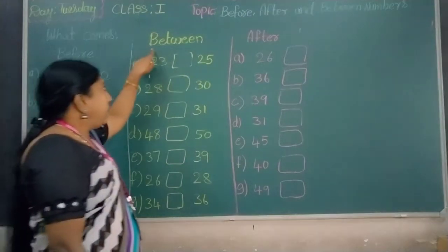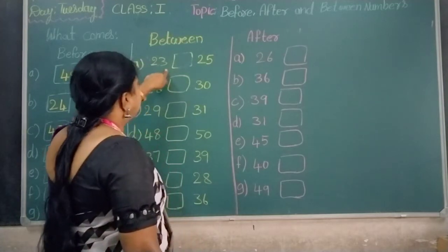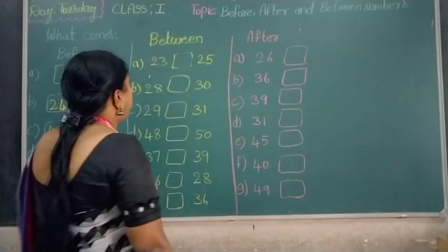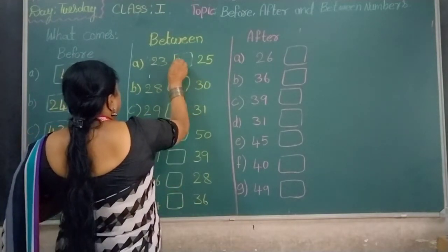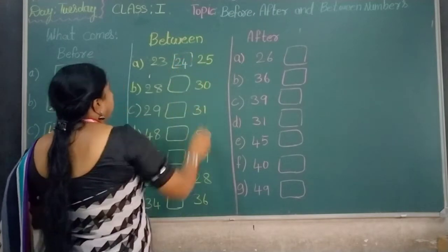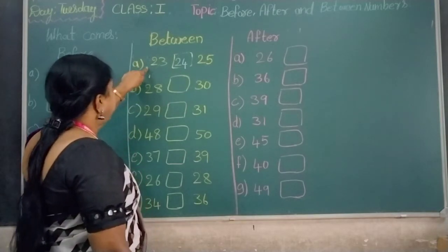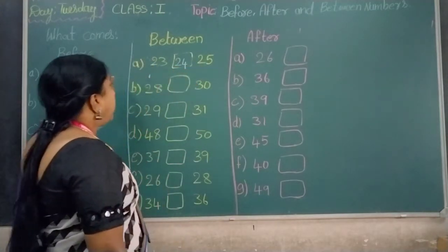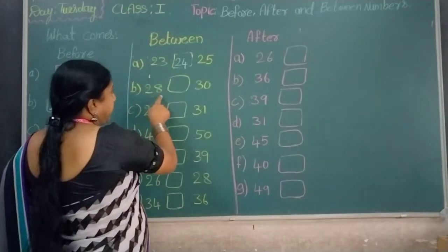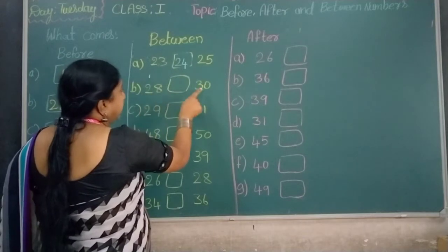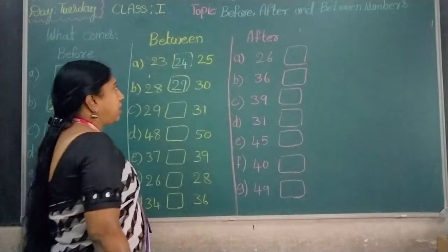Okay, next: between numbers. Which number comes in between 23 and 25? Number 24. Which number comes in between 28 and 30? Number 29.